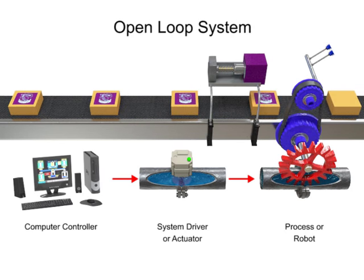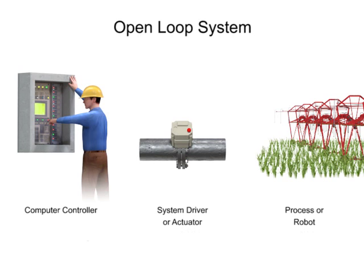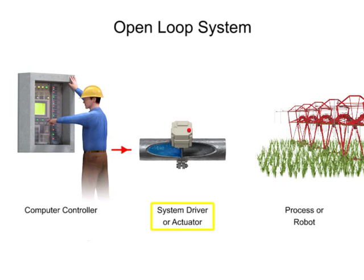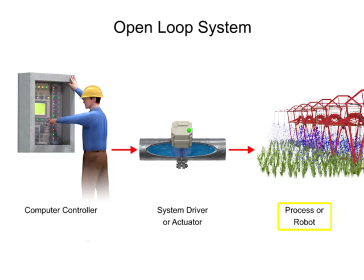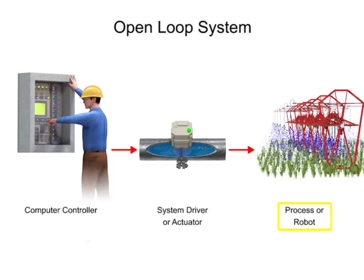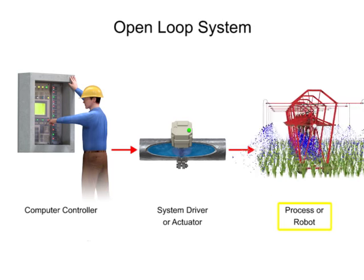A simple example of an open-loop system is an industrial sprinkler system. In this example, the programmer updates the computer controller, which will turn the sprinkler on at a designated time. When the computer sends the signal, the water valve will turn on. When the valve turns on, water flows to the sprinkler and drives a motor that allows the sprinkler to simultaneously move along the field and water the crop.